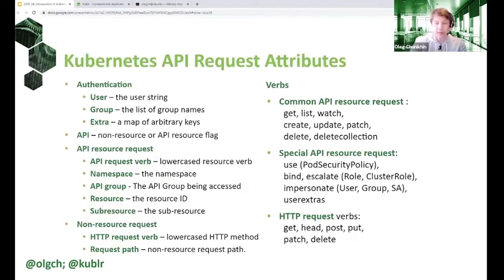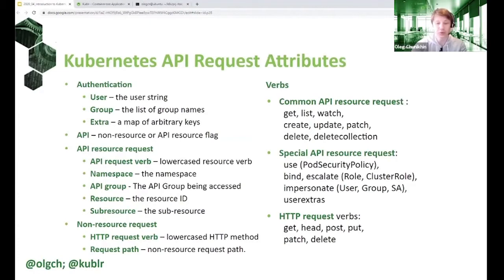Everything you do with a Kubernetes cluster after it is deployed is done through the Kubernetes API. The Kubernetes API is a more or less standard REST API — it follows REST conventions and philosophy. It provides resources mainly corresponding to Kubernetes objects stored in the Kubernetes database, plus several non-resource REST endpoints — like an endpoint to check the version of the Kubernetes cluster or health-checking endpoints.